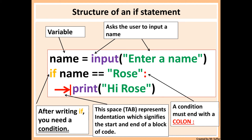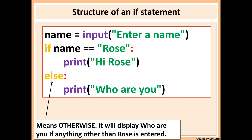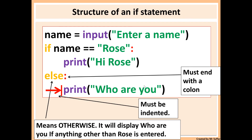This is not efficient — we need to display something if the user types something other than Rose. To do that we use else. Else allows us to display something if the first condition is not met. So if the user doesn't type Rose, if the user types anything else, then it will display 'Who are you?'. Else does not have a condition — you just put else then a colon. You have to remember the colon; it's very important, if you don't put it you will get an error. So else just means 'otherwise do this'. We always need to indent after if and after else so we know that part of the code is inside the if statement or the else.